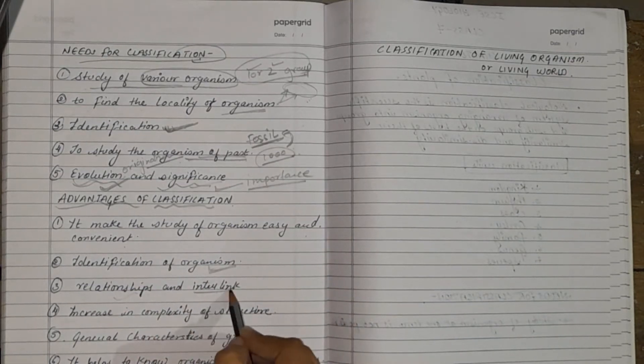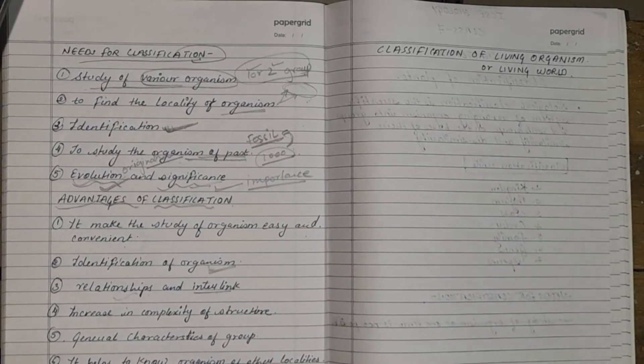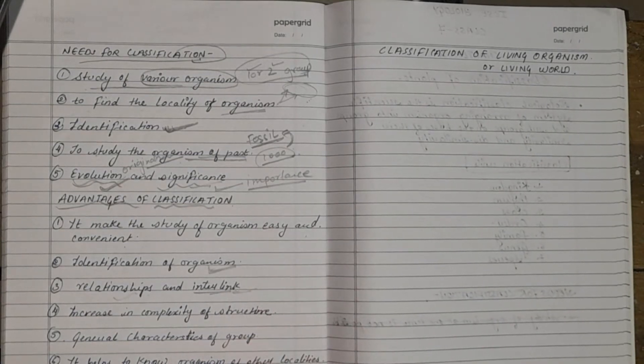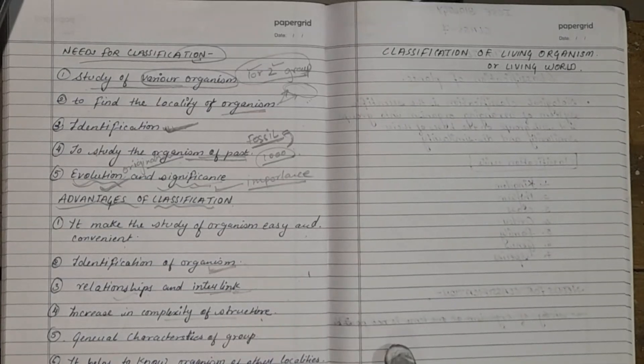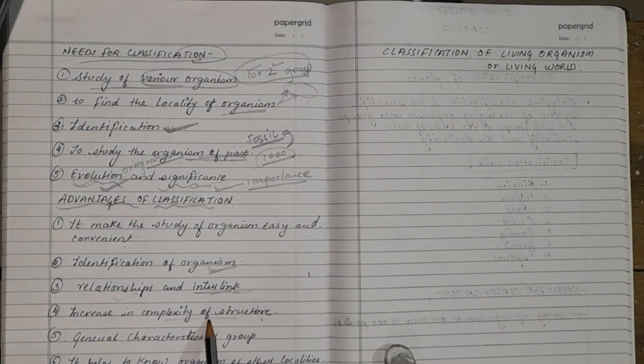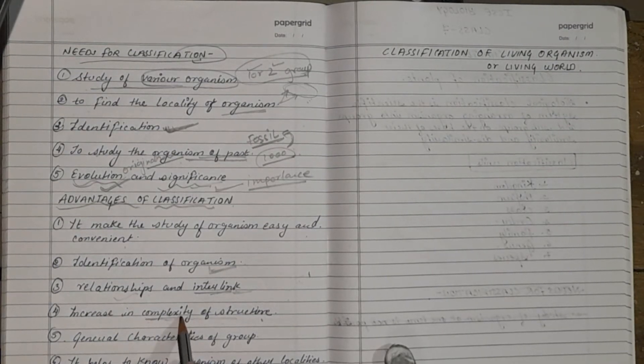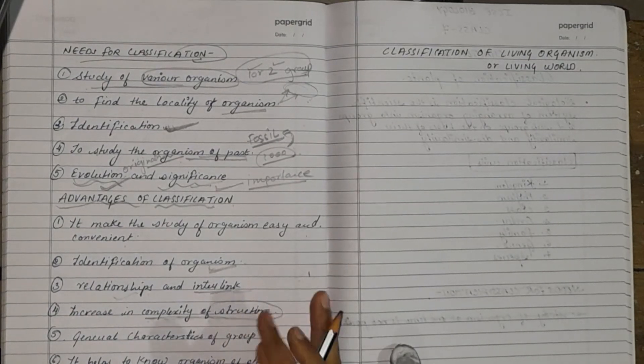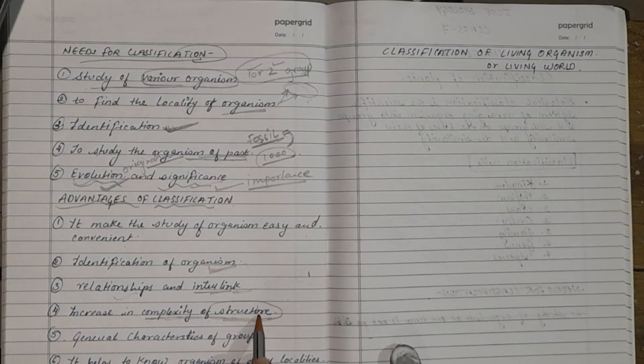Relationship and interlinks. Interlinks means characteristics which are common. Increase in complexity of the structure. It shows evolutionary trends in various groups of organisms by revealing gradually increase in the complexity of structure in those organisms. It means that with the increase in phylum or with the increase in kingdom, the complexity of structure also increase. Structure may be considered to be the body structure of the organism.